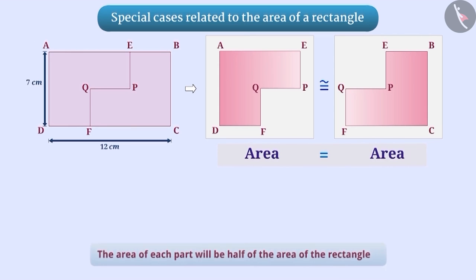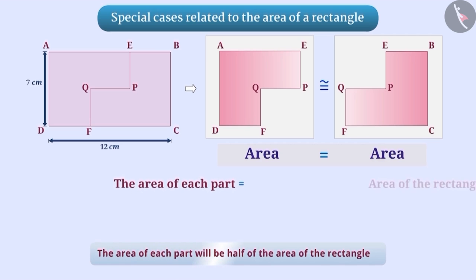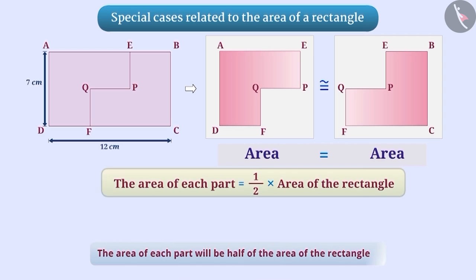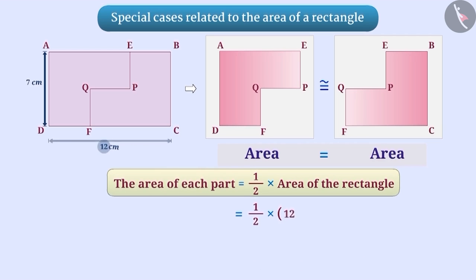We can conclude that the area of each congruent part will be half of the area of the rectangle. Thus, the area will be half into 12 cm into 7 cm, which is equal to 42 square centimeters.